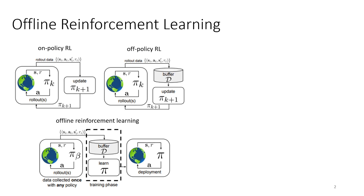Offline reinforcement learning dispenses with active data collection entirely. We assume we are given a dataset collected by some unknown behavior policy, which we denote pi_beta. D is our dataset — an unordered set of state, action, next state, and reward tuples. In practice those tuples are typically arranged into trajectories, but value-based methods generally do not make use of this — they just assume you're given transitions.